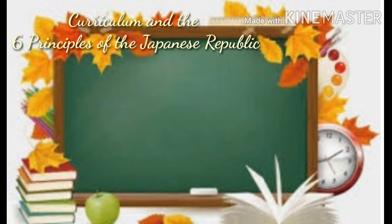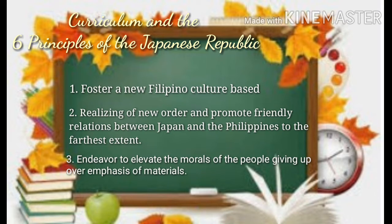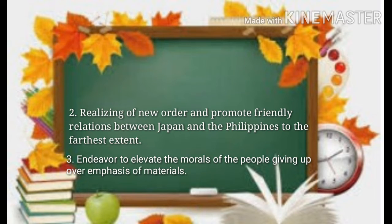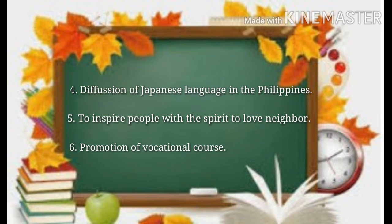The curriculum followed the Six Principles of the Japanese Republic. First, foster a Filipino culture. Second, realize the new order and promote friendly relations between Japan and the Philippines. Third, endeavor to elevate the morals of the people, giving up overemphasis of materials. Fourth, diffusion of the Japanese language in the Philippines. Fifth, inspire people with a spirit to love their neighbor. And lastly, promotion of vocational courses.